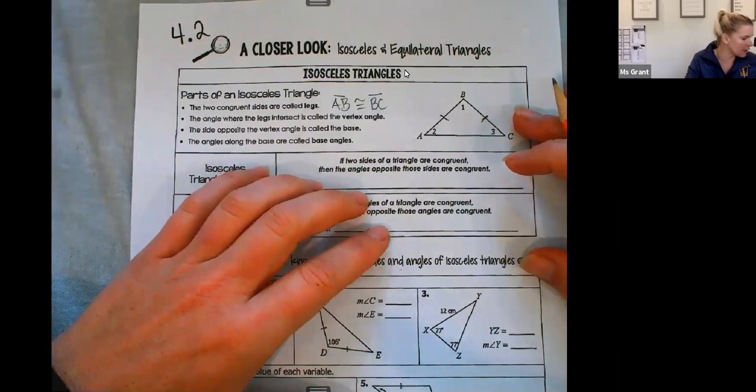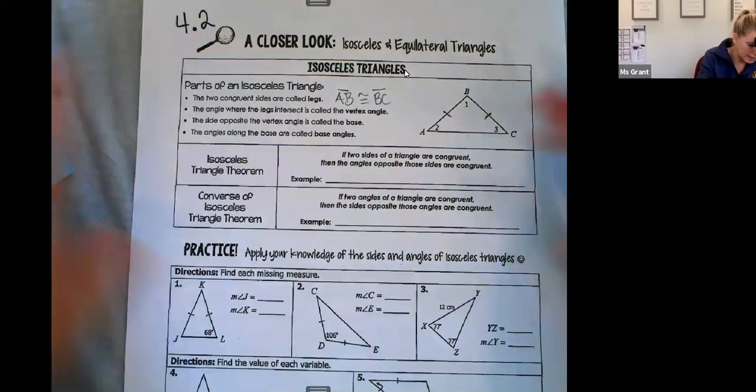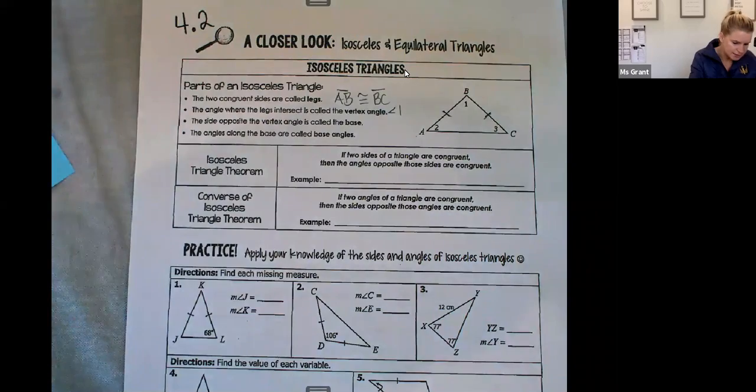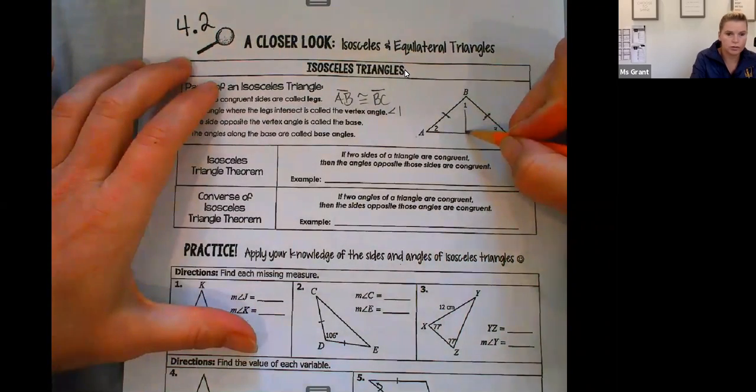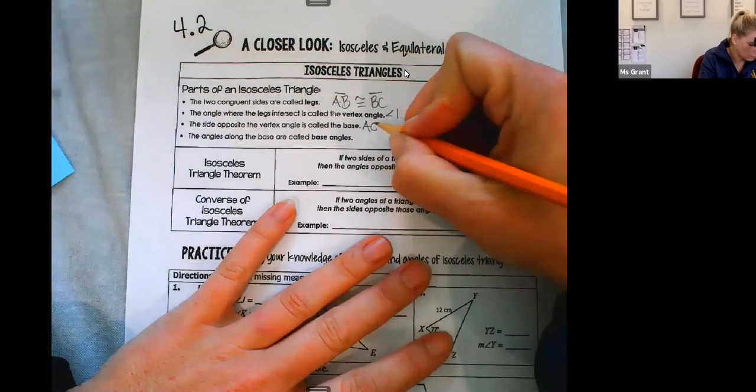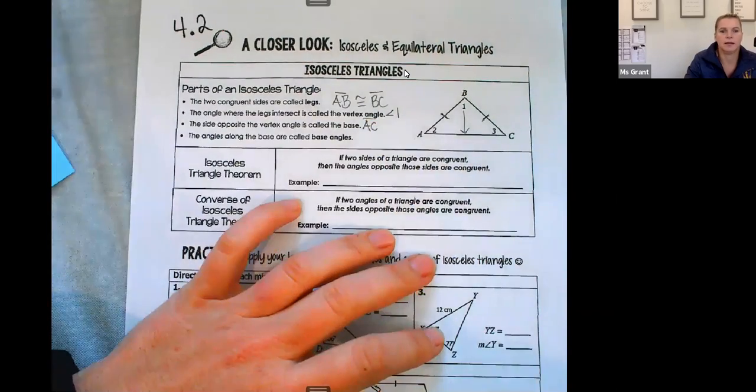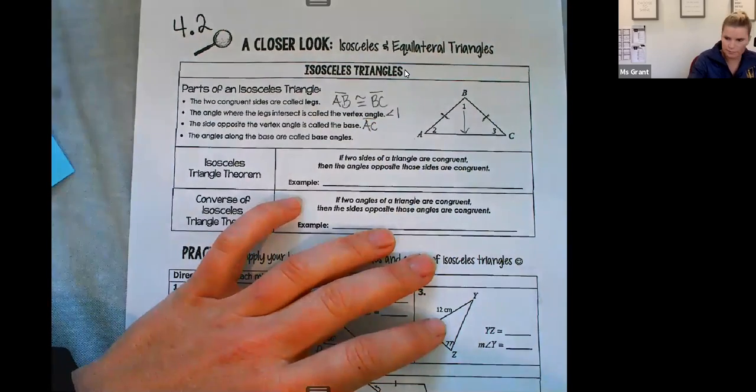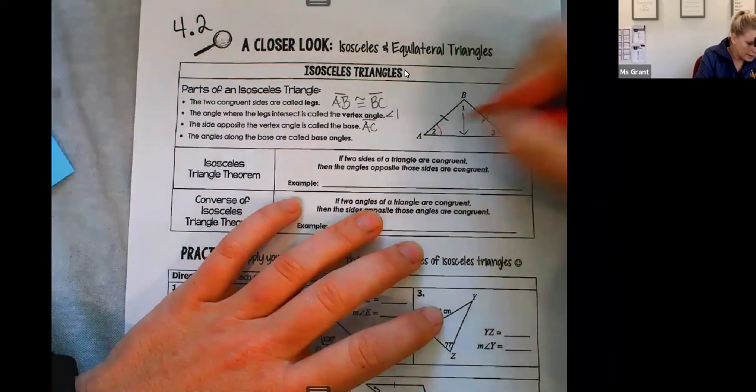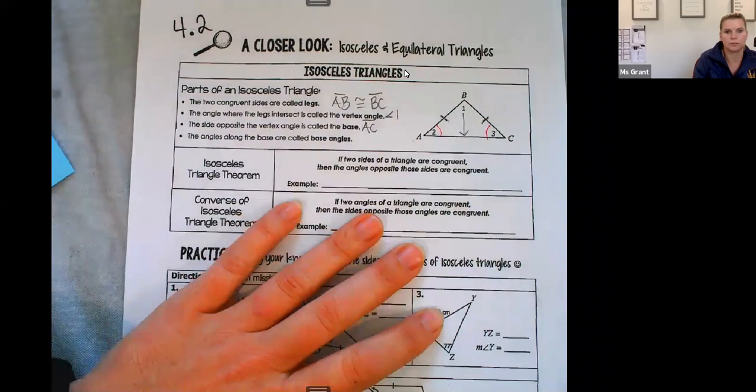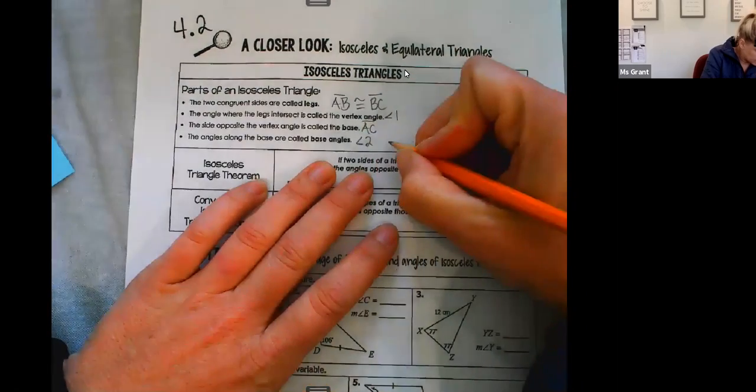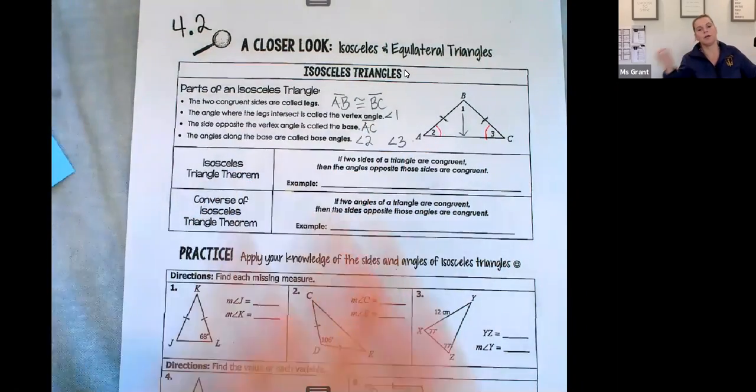The angle where the legs intersect is called the vertex angle. That's going to be angle one. The side opposite the vertex angle, that's this side, is called the base AC. Then the angles along the base, these two angles are called the base angles, angle two and angle three. So those are the base angles.